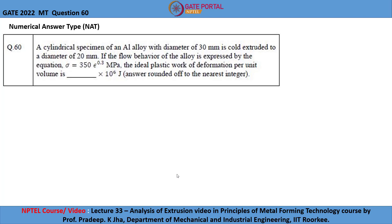Let me study the question. A cylindrical specimen of an aluminum alloy with diameter of 30 mm is cold extruded to a diameter of 20 mm.